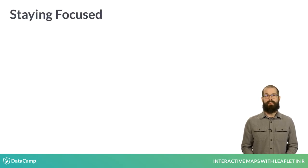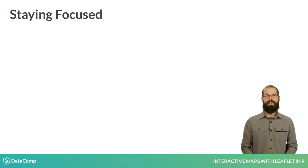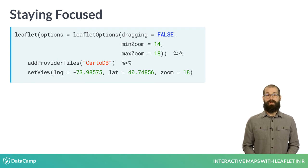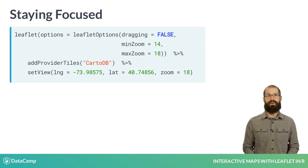Sometimes we'll want our map to remain focused on a particular geographic area. One way to accomplish this is to turn off the ability to pan the map and to limit the allowed zoom levels. Switching dragging to false will prevent panning, and setting the min and max zoom arguments will limit the zoom range, effectively setting and maintaining the focal point while preserving the interactive features of our web map.